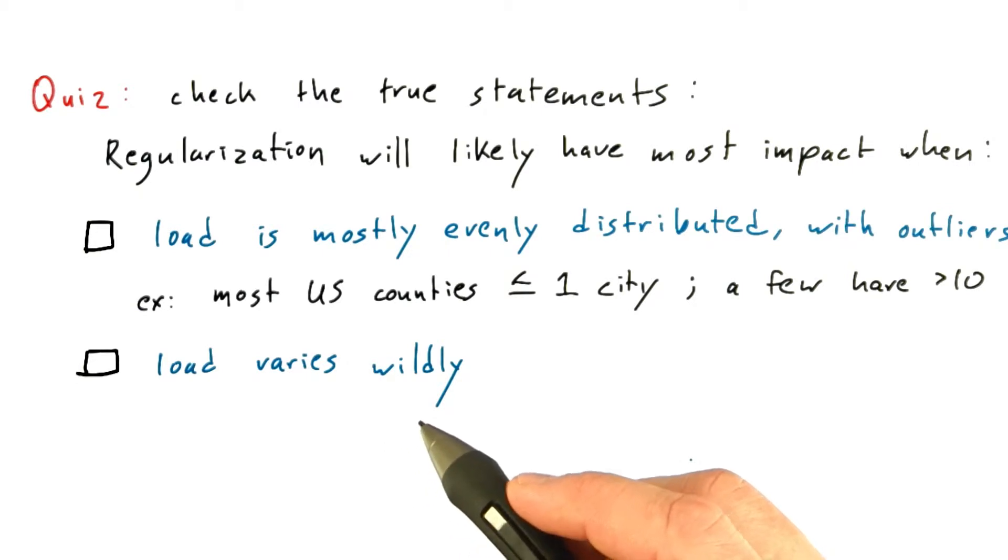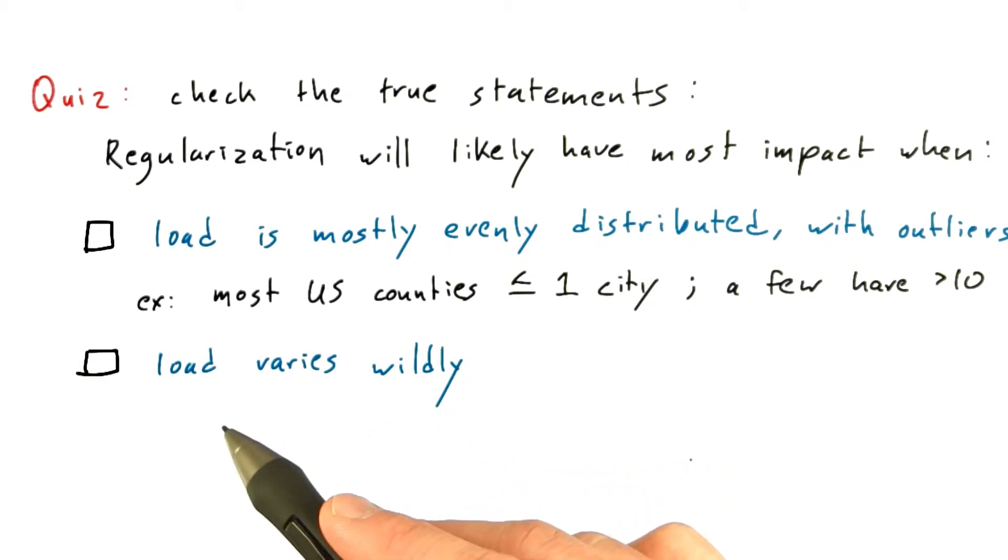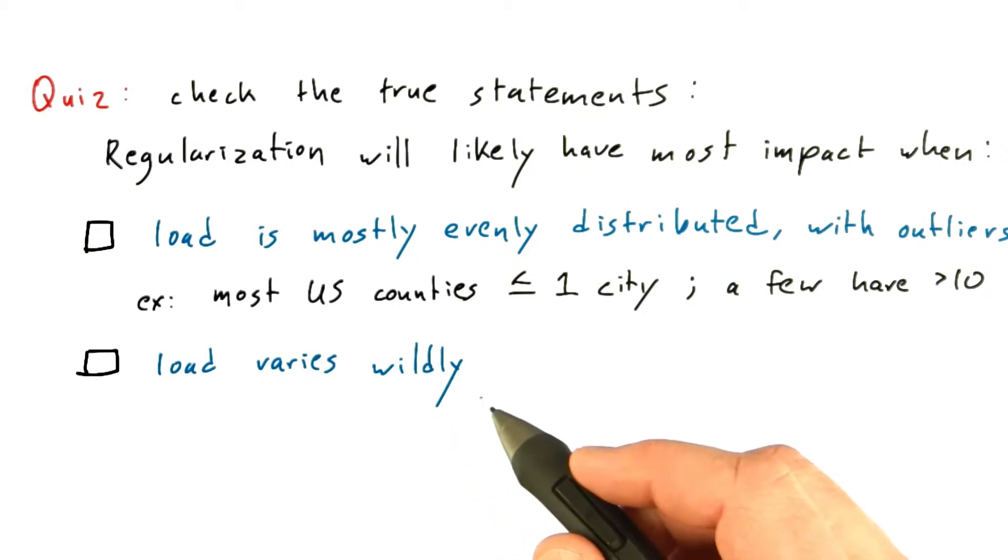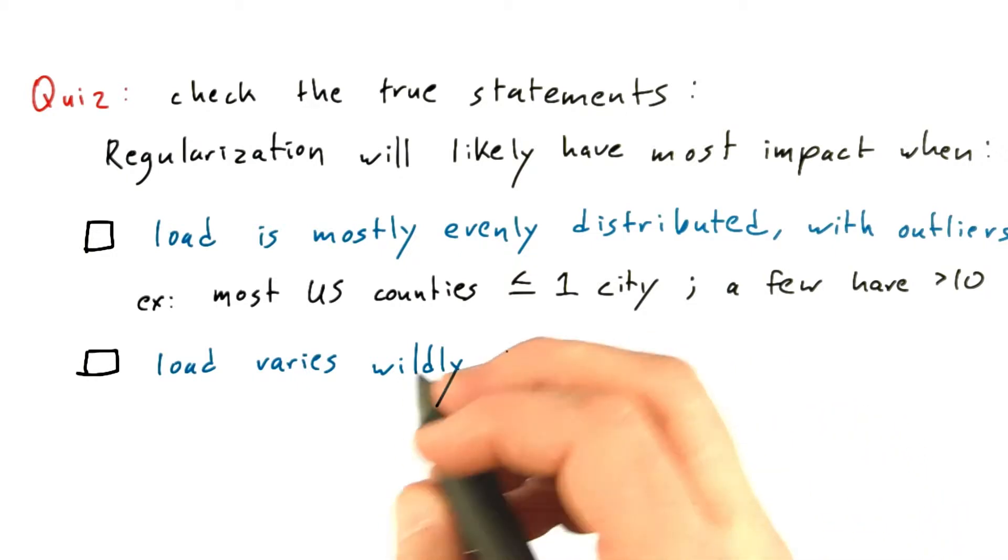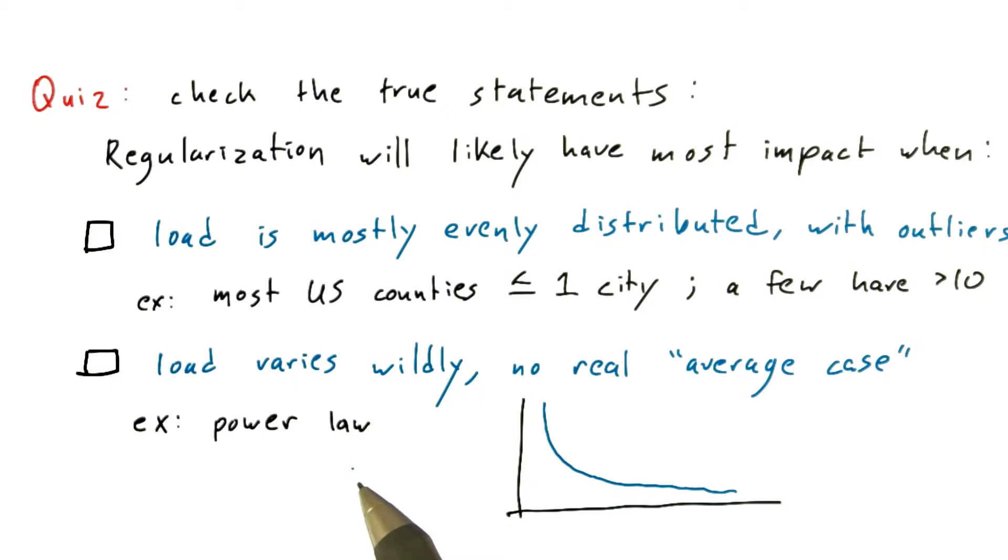Or is it the case that regularization will have most impact when the load varies wildly from task to task? And by wildly, I really mean that there's no real average case. An example of this would be popularity. Some people have claimed that celebrity popularity, like if you measure the number of followers somebody has on Twitter, follows a power law graph distribution.